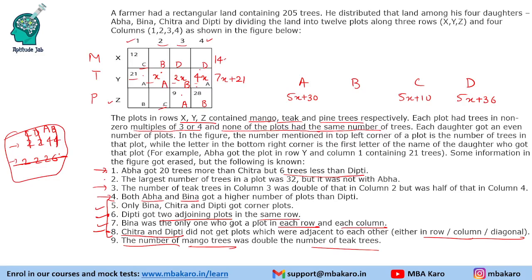Abha's total is 5x + 30. Bina's total has no direct information yet. Chitra's total is 5x + 10, and after subtracting the known 12 trees, we get 5x − 2 for the unknown portion. Deepti's total is 5x + 36. Adding all values: the mango row gives 14x + 42, teak gives 7x + 21, pine row contributes, giving 26x + Y = 205, where Y is the unknown plot value for Bina.